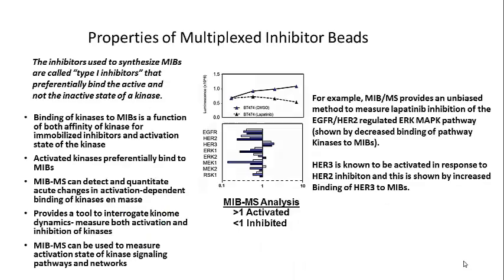The properties of multiplexed inhibitor beads are very important for our ability to measure activation and inhibition of specific kinases. The inhibitors we've chosen are broad pan-kinase inhibitors, but they are type 1 inhibitors in that they preferentially bind the active and not the inactive state of a kinase, allowing us to enrich for activated forms. Binding of kinases to MIB columns is a function of both the affinity of the kinase for the immobilized inhibitors and the activation state of the kinase. Activated kinases preferentially bind to MIBs; inactive kinases do not. They can detect and quantitate acute changes in activation-dependent binding of kinases, providing a tool to interrogate kinome dynamics and measure both activation and inhibition of different kinases simultaneously.